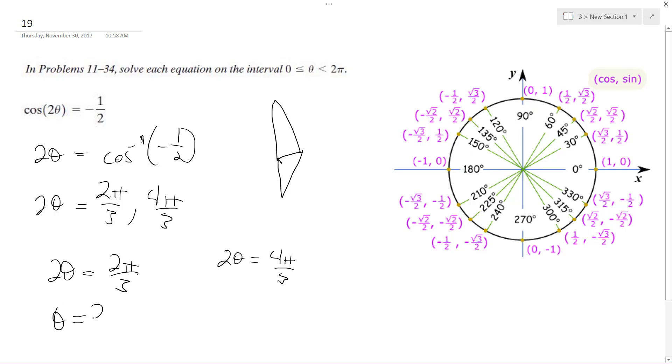Divided by two. So what we end up with is pi over three and two pi over three.